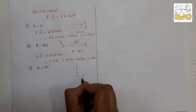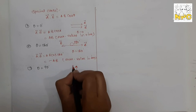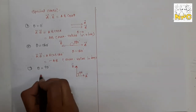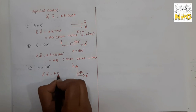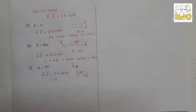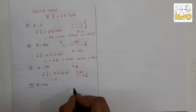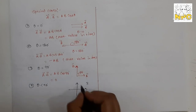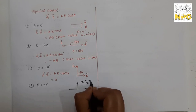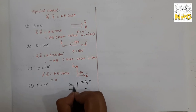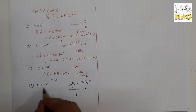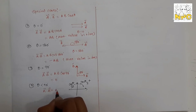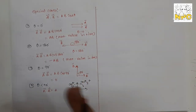Third case: theta equals 90 degrees, meaning the two vectors are perpendicular to each other. Then a dot b equals a·b·cos 90, and since cos 90 equals 0, the dot product is zero. So if two vectors are perpendicular, their dot product is zero.